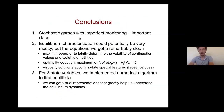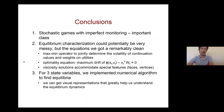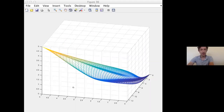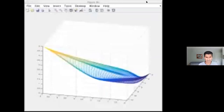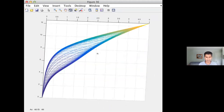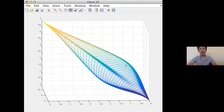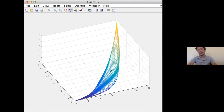To conclude: stochastic games with imperfect monitoring are an important class of games. The authors derive an optimality equation that characterizes equilibria and implement it numerically, producing highly visual pictures including three-dimensional shapes of the equilibrium payoff set. The speaker shows the 3D picture of the set for the moral hazard in teams example before wrapping up for time.